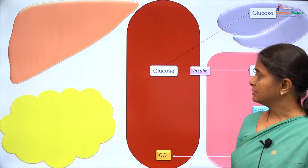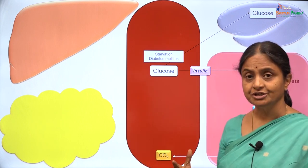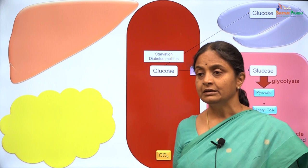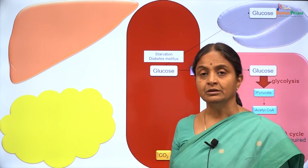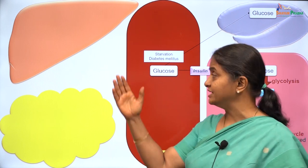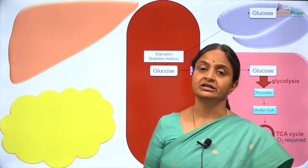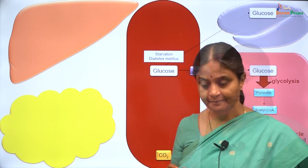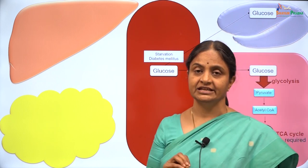What about conditions where glucose is in short supply — for example, starvation or diabetes mellitus? In starvation, initially there will not be hypoglycemia because the liver will put out glucose by breaking down glycogen through glycogenolysis, or forming glucose from other sources like proteins and fats through a process called neoglucogenesis. By both mechanisms, the liver will attempt to put glucose into blood, but that will not be enough and the cells will need alternate sources of fuel.